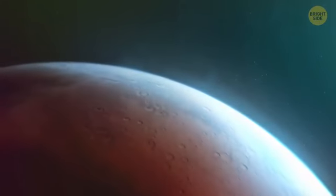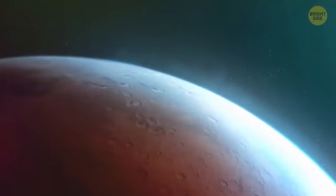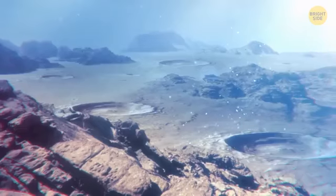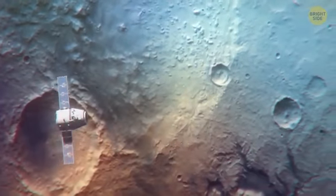Sunsets on Mars are blue. That happens because the fine dust on the red planet has the size perfect for blue light to efficiently penetrate the atmosphere of Mars. So, the blue light scatters, after which it stays closer to the direction the Sun goes, unlike the light of other colors.